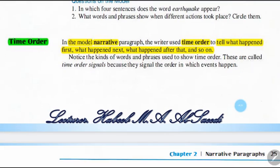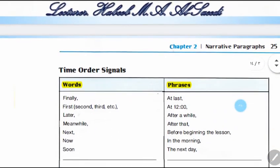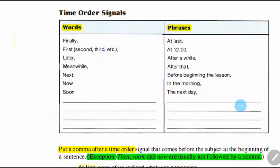Time order: in the model narrative paragraph, the writer used time order to tell what happened first, what happened next, and what happened after that — to organize events according to their happening. Here we have time order signals: words and phrases such as finally, first, later, meanwhile, next, now, at last, and more. These are the phrases and words we can use to organize our writing when we write a narrative paragraph.